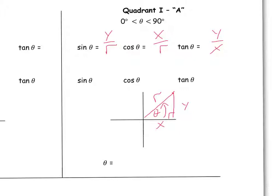What about the sign — are these ratios positive or negative? In quadrant 1, Y is positive, so sine is positive. X is positive in quadrant 1, so cos is positive. And tan is Y over X — a positive over a positive — so tan is also positive. That's what the 'A' in the CAST rule means: all trig functions are positive in quadrant 1. Also, in quadrant 1, theta and the reference angle are the same.